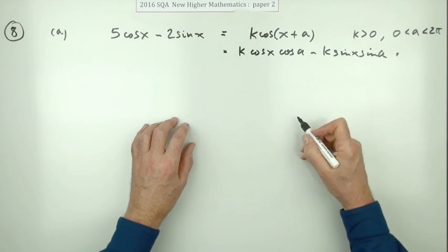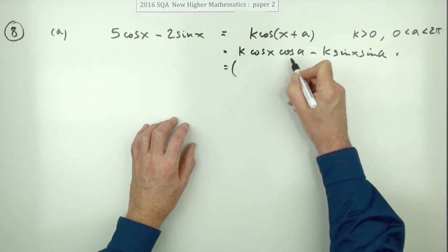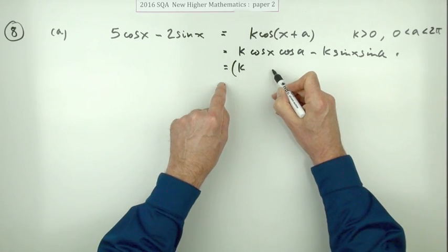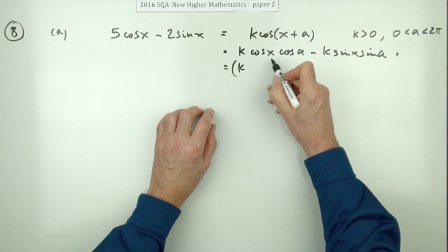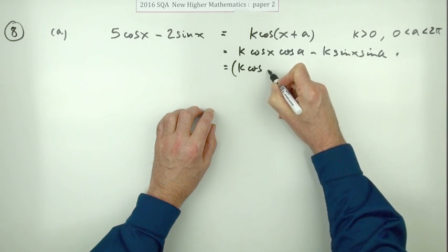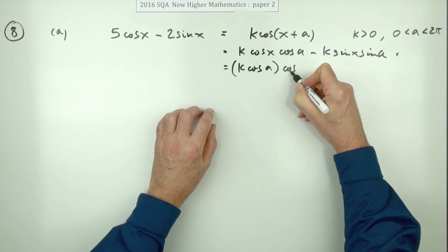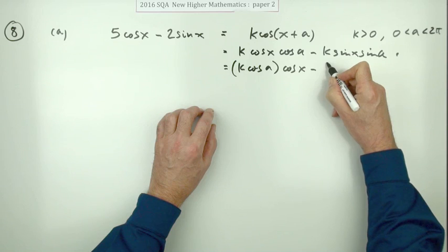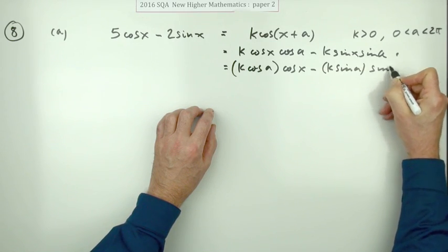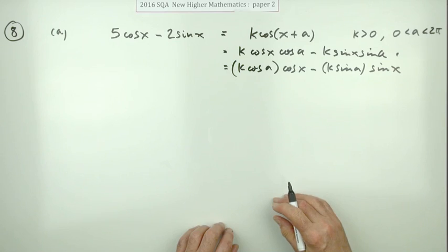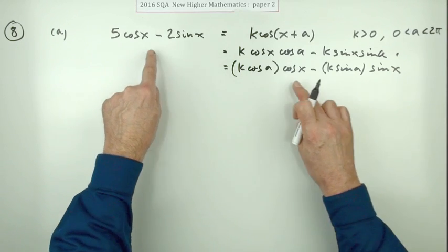We did look up the front, and it'll just take time to rewrite this as coefficient times term, because a is just the fixed number here, x is the actual variable. So that's k cos a lots of cos x minus k sin a lots of sin x, because what you do next is equate corresponding terms.